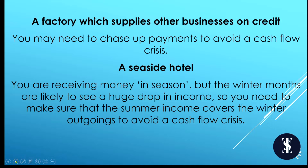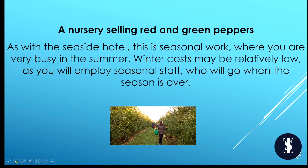A factory which supplies other businesses on credit must chase up payments to avoid a cash flow crisis. A seaside hotel receives money in season — normally summer — but in winter months faces a huge drop in income, so summer income must cover winter outgoings. A nursery selling peppers is also seasonal: very busy in summer, with very low costs in winter because seasonal staff leave when the season is over.